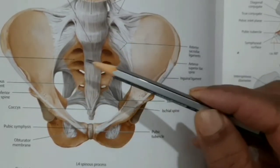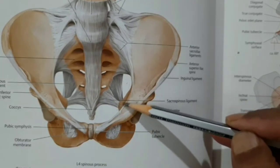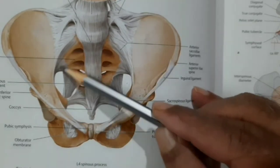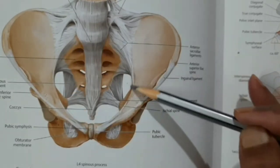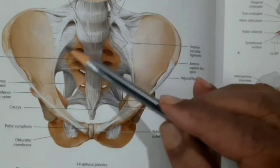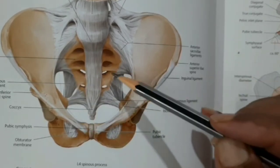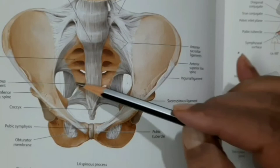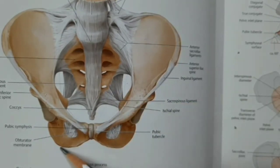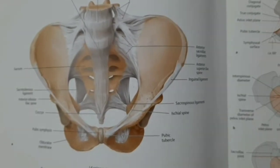The true pelvis extends from the sacral promontory to the arcuate line, forming the superior aperture or inlet of the pelvic cavity. Below this margin — the arcuate line, iliopectineal line, and pecten pubis — is the pelvic inlet. The outlet is lower down. Between the outlet and inlet is the pelvic cavity.